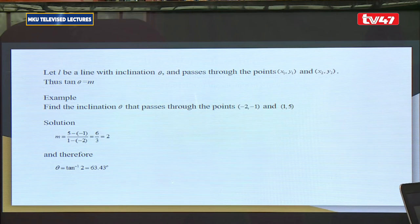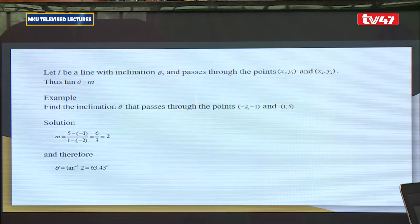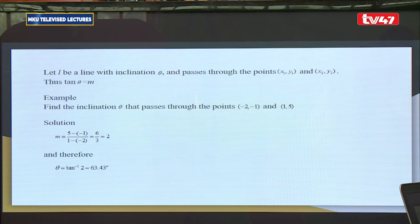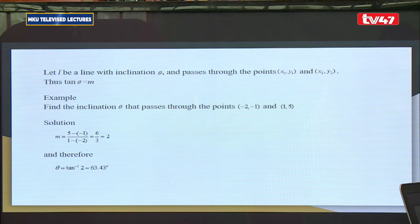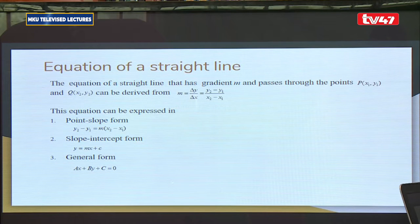Example: Find the inclination theta of the line passing through (-2, 1) and (1, 5). Finding the gradient m = (5 minus (-1)) / (1 minus (-2)) = 6/3 = 2. Therefore theta = arctan(2), which gives us theta = 63.43 degrees. That is our angle of inclination.